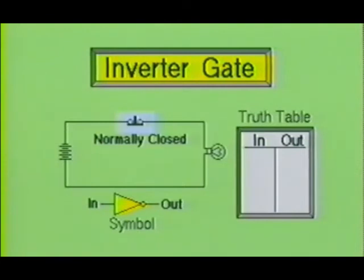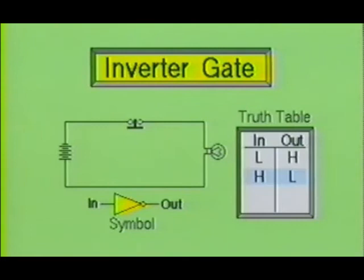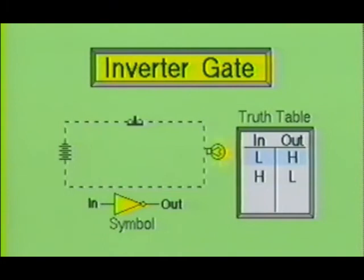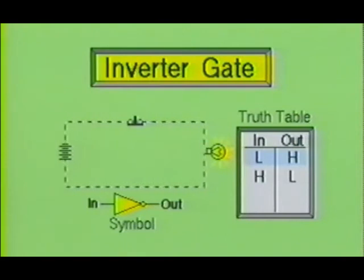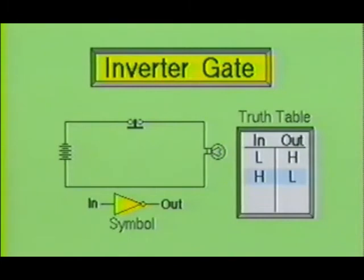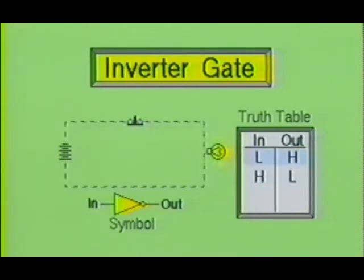The switch used in the inverter circuit is different from those used to illustrate the AND gate and the OR gate. The switches used for the AND gate and the OR gate were normal open switches, but the switch used for this simple circuit is a normal closed switch. In this circuit, the lamp is normally energized; only when the switch is open does the lamp turn off. Since the inverter has only one input and one output, it will have only two states of operation. When the input is high, the output will be low, and when the input is low, the output will be high. Basically, the inverter reverses or inverts the incoming signal. You will also hear this gate referred to as a NOT gate.